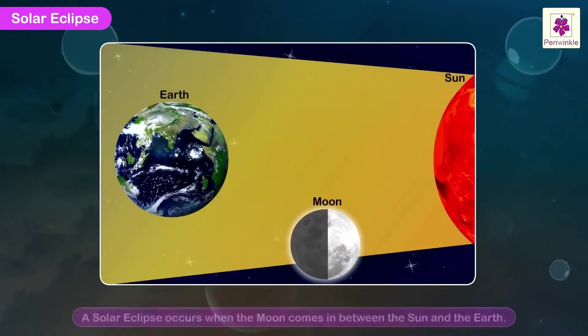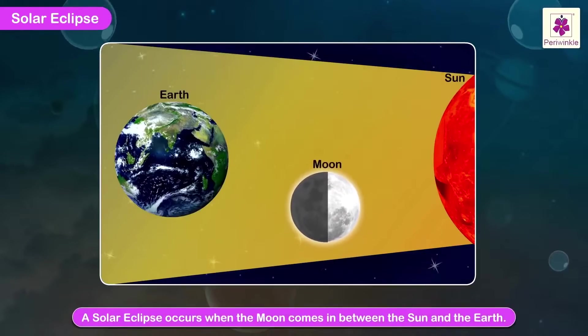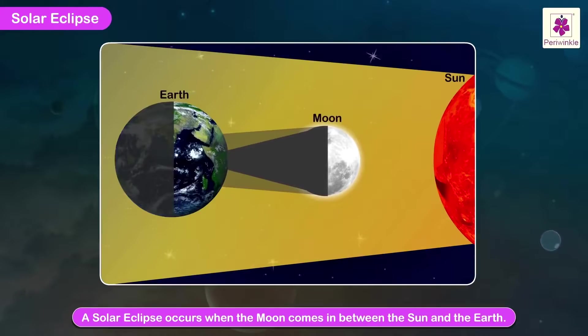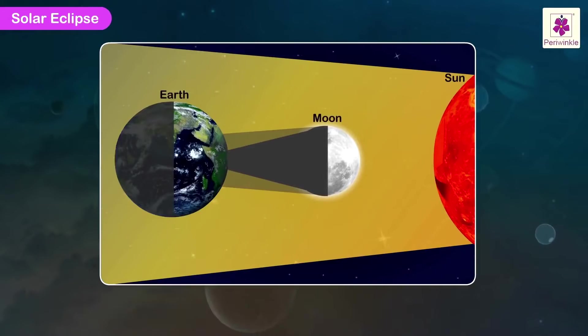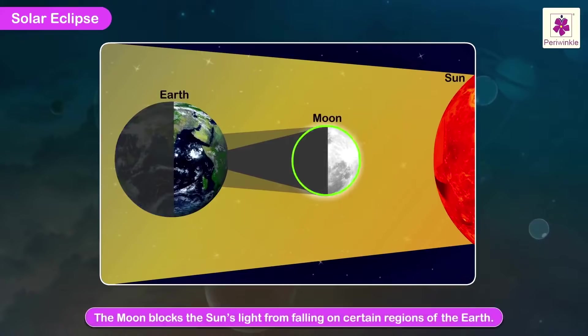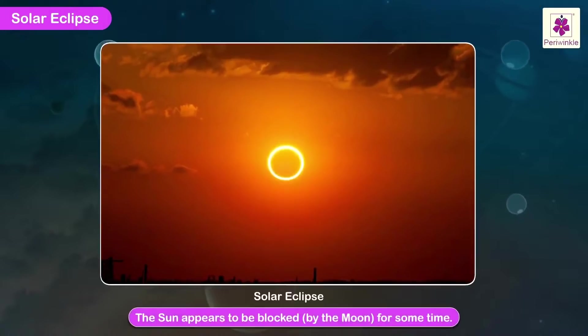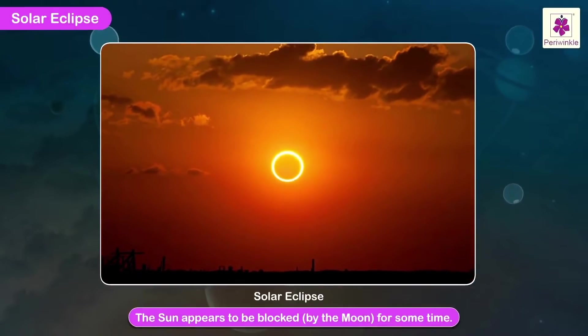Solar Eclipse. A solar eclipse occurs when the Moon comes in between the Sun and the Earth. As a result, the Moon blocks the Sun's light from falling on certain regions of the Earth. For the people in these regions, the Sun appears to be blocked by the Moon for some time. This is called a solar eclipse.